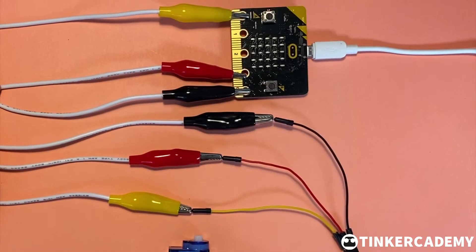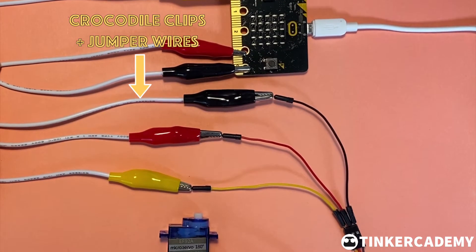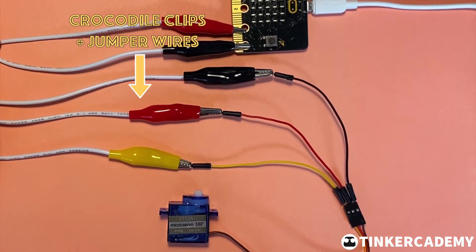Alternatively, you can use jumper wires to connect the servo motor directly without the use of the breakout board.